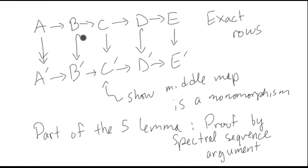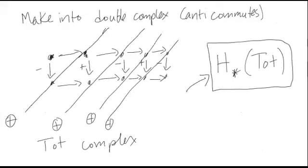We're going to assume that we have a monic and an epi, and we're going to show that the middle morphism is also an epi. We're going to turn our commutative diagram into a double complex, requiring that following two horizontal arrows will be zero, which in our assumption means the top row and the bottom row are exact.